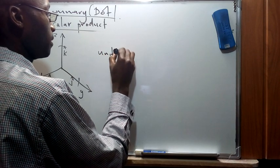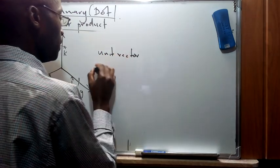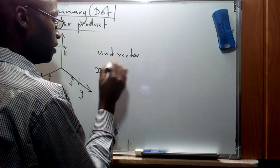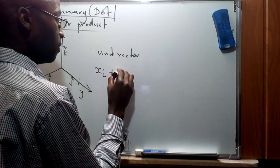So for a unity vector, the x component is one, which is represented by i, and then the y component...